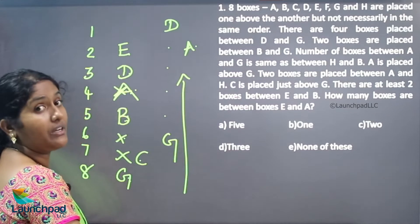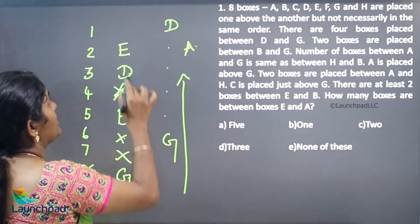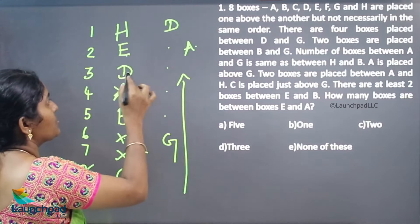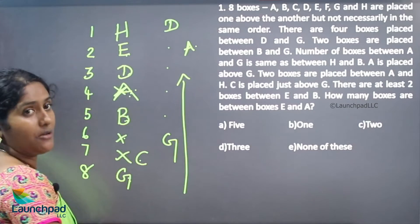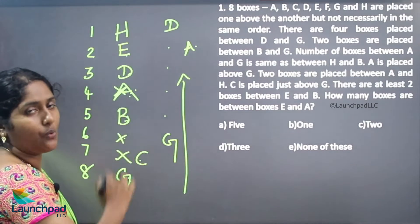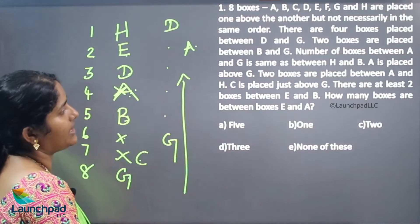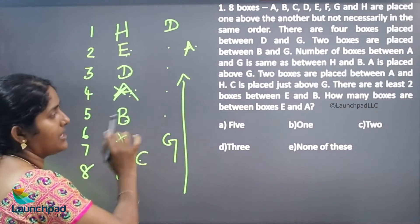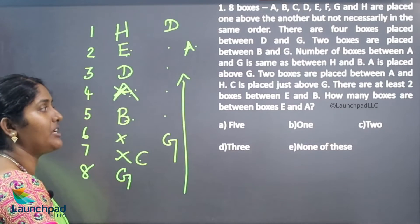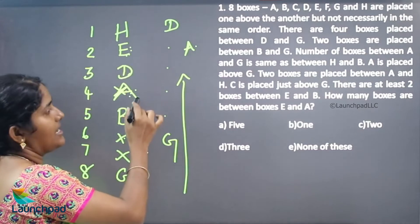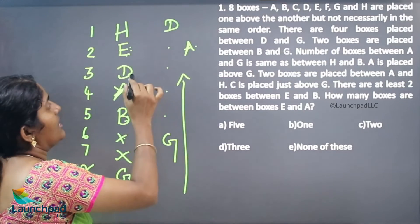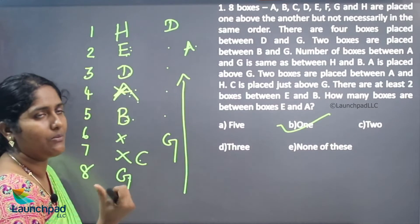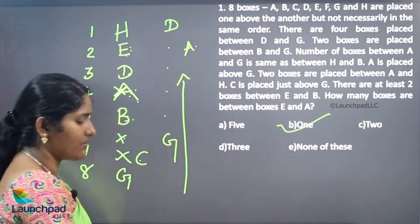The same number of boxes between H and B — 3 boxes, equal spaces. There are at least 2 boxes between E and B. How many boxes are between E and A? Only 1 box. Option B is the correct answer. We will move on to the next question.